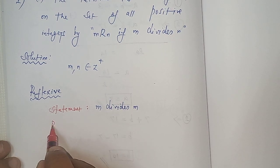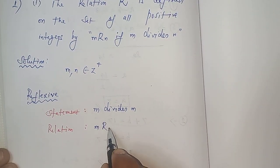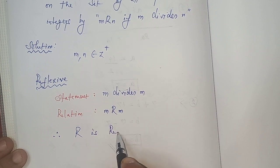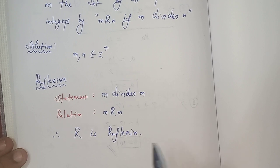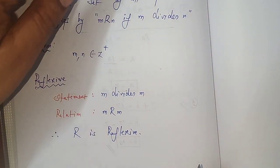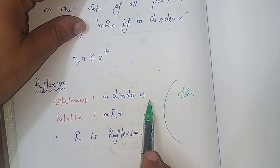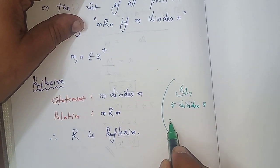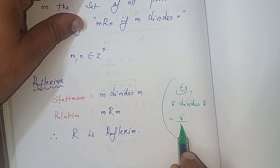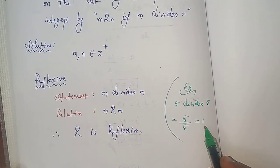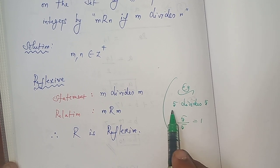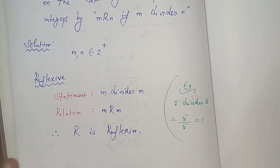Therefore, m is related to m. The relation R is reflexive. For reference, here is an example: m divides m — I take 5 divides 5, meaning 5 is divided by 5. You get quotient 1 and remainder 0. So we can say 5 divides 5. R is reflexive.